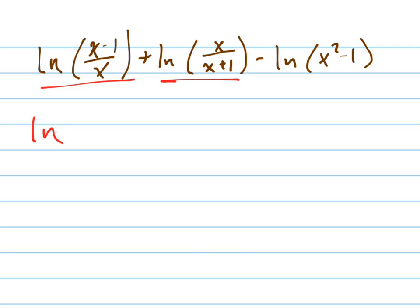Since they have the same base, namely the natural log, we're going to multiply these together. So it's x minus 1 over x times x over x plus 1 minus, I'll leave that, I'll do it one step at a time.